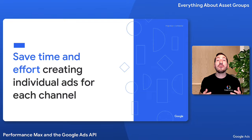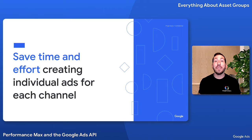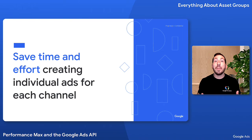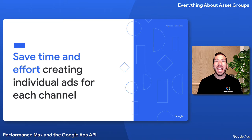This should save you a great deal of time and effort because you no longer have to create individual ad resources for each channel while trying to manually optimize your spend. Asset groups are typically centered around themes or related to target audiences.